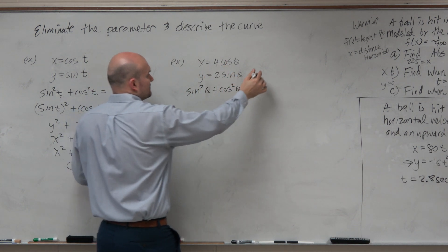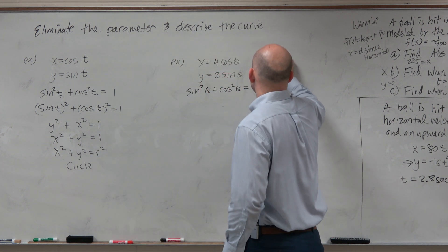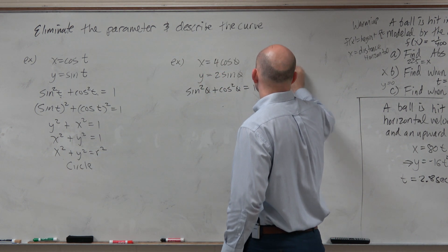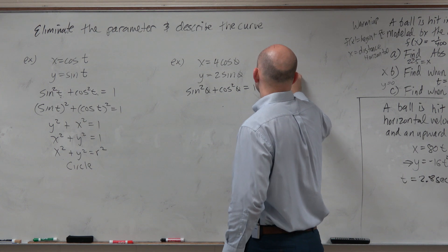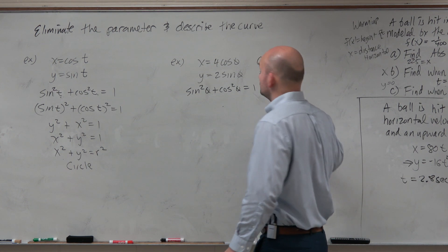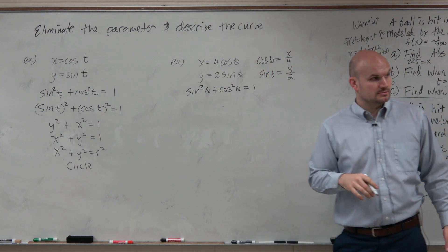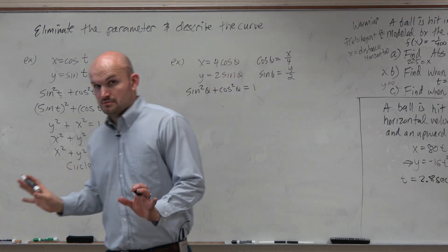So again, to solve for cosine of theta, we could say cosine of theta is equal to x over 4. Sine of theta is equal to y over 2. Do you guys agree? Yes?